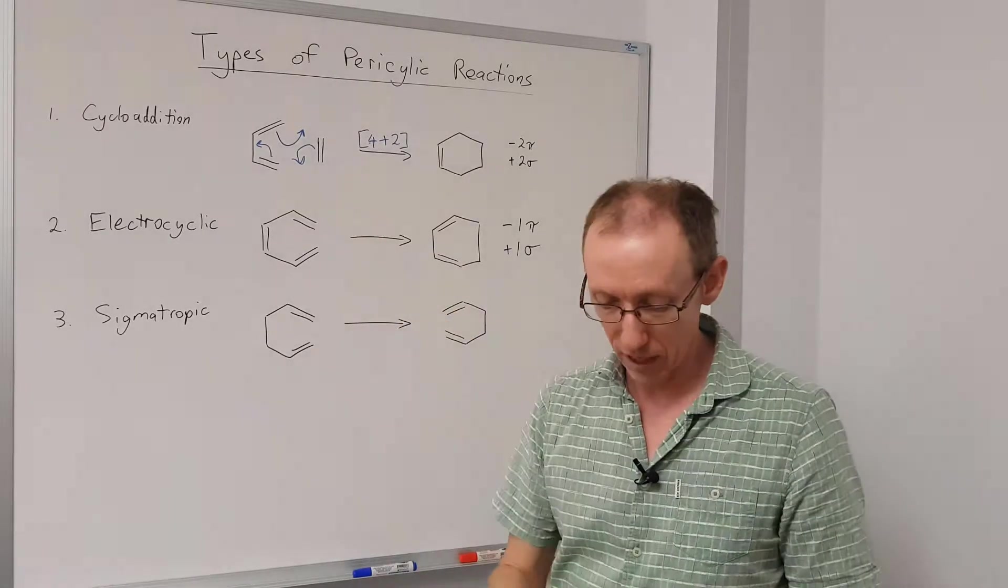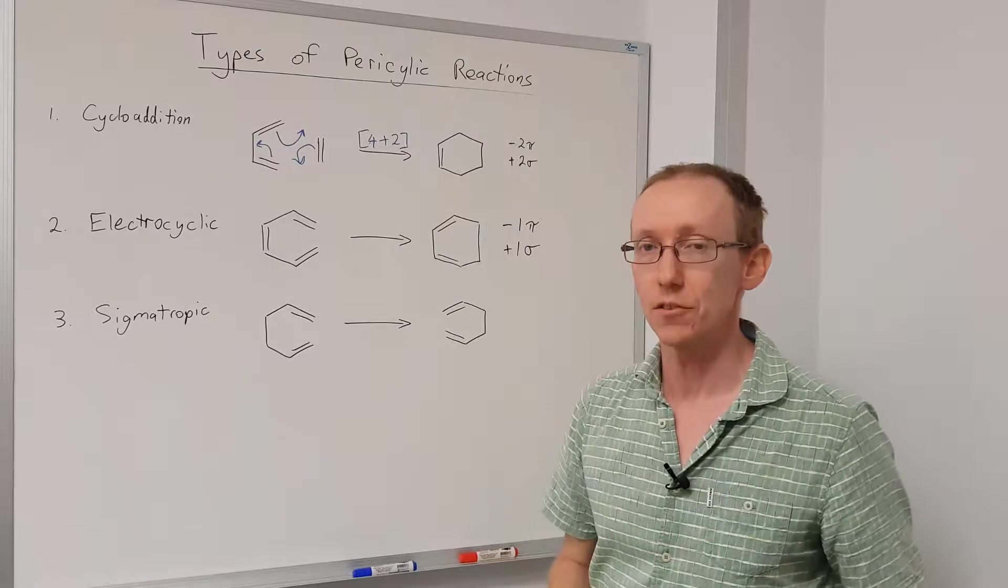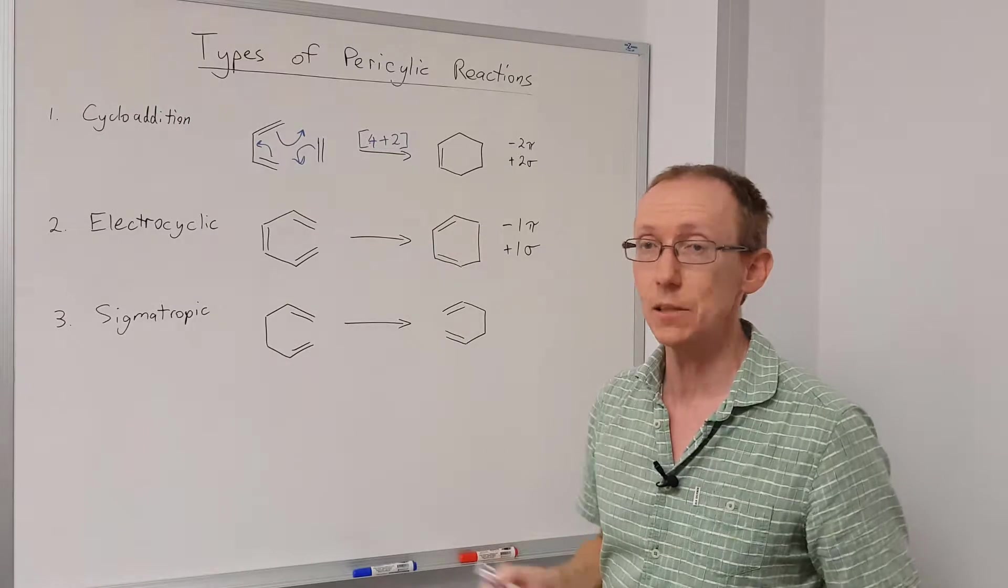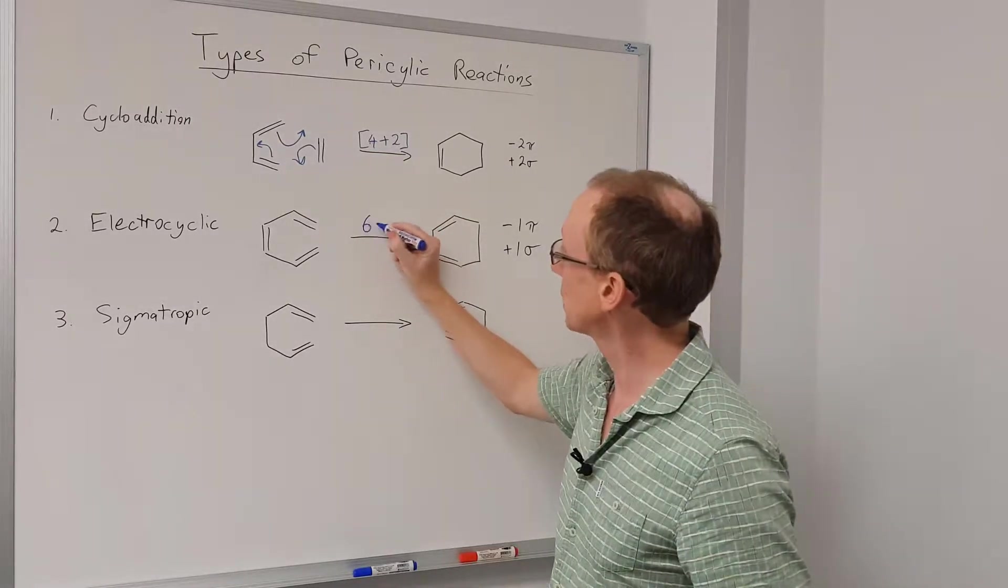Now, for electrocyclic reactions, we just look at the number of pi electrons, and so this process has three pi bonds, so that's six pi electrons, so there'll be a six pi electrocyclization.